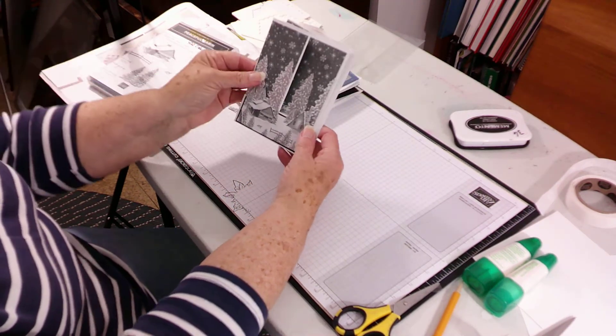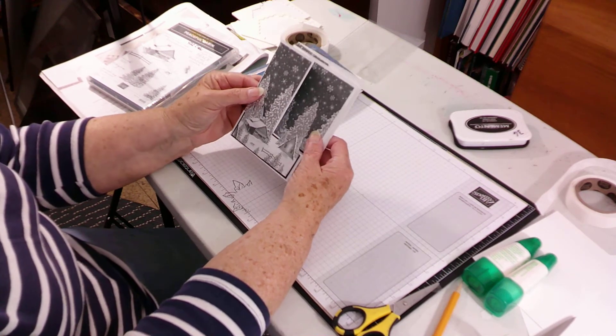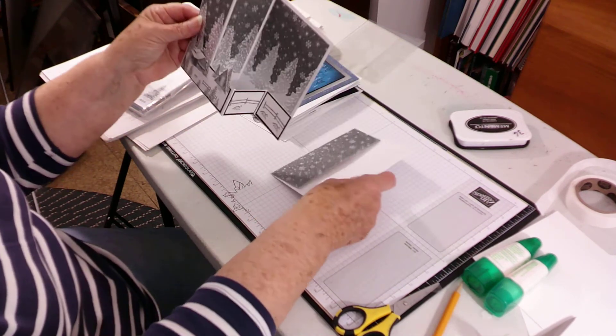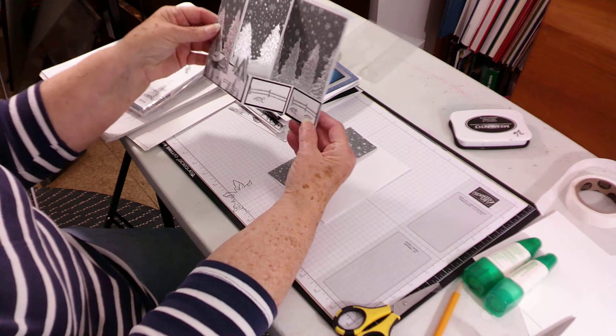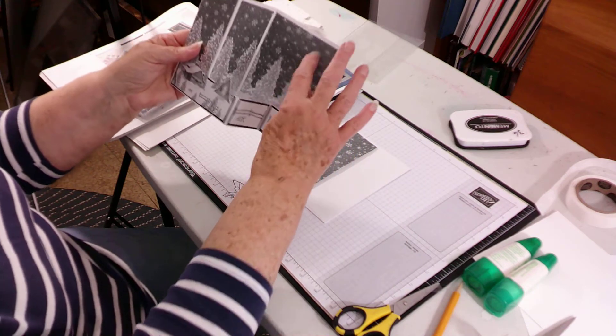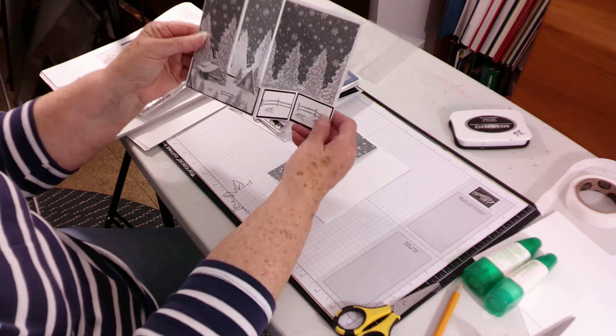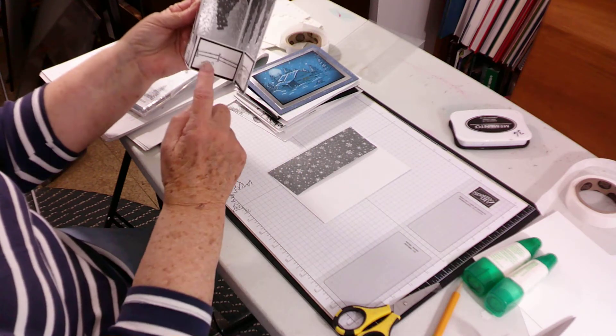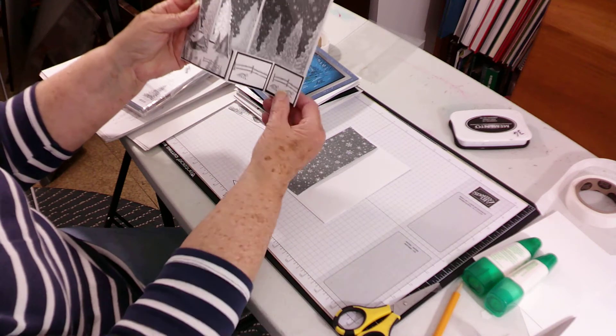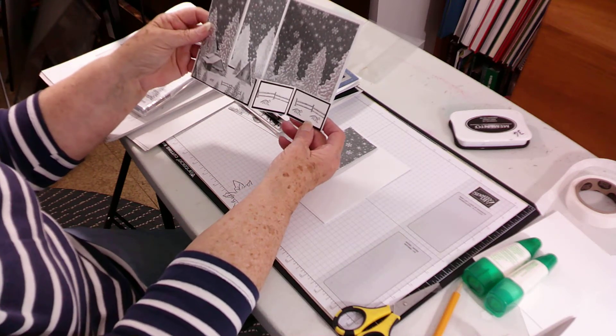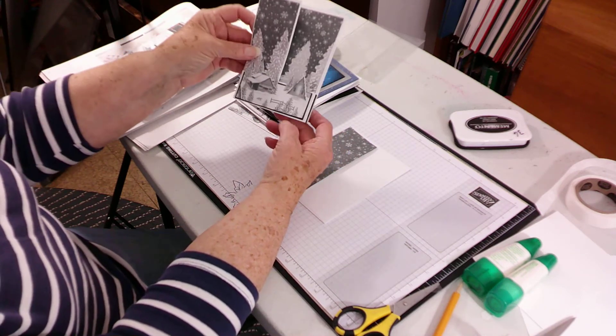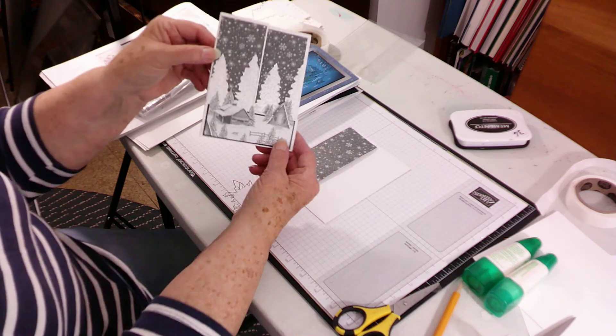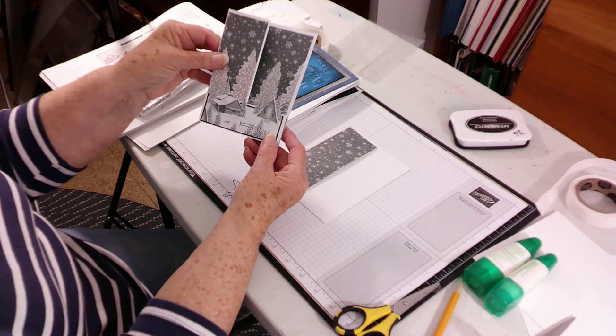So here are the different ones I came up with. This is a z-fold card and these two are papers. This is cut from the paper, the tree and then this also is cut from the paper. The only things I stamped were these little sections right here with the fence and the fox. So look how pretty. I don't know if you can see how glittery those trees are but they're beautiful.